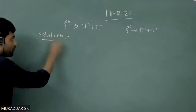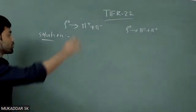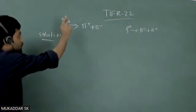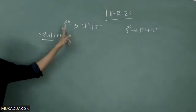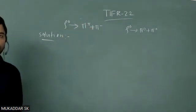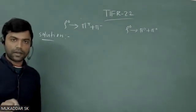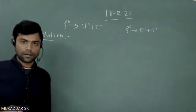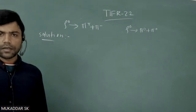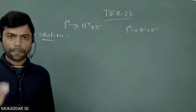First of all, for rho zero decay, this decay will always be allowed only by strong interaction. Whenever there is a rho meson decay, that should be allowed only by strong interaction. Second thing: for any decay or interaction, angular momentum should be conserved.